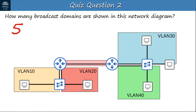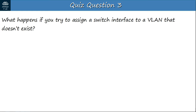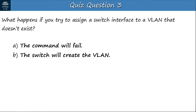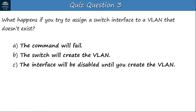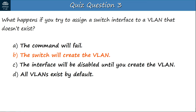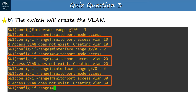Question 3: What happens if you try to assign a switch interface to a VLAN that doesn't exist? A — the command will fail. B — the switch will create the VLAN. C — the interface will be disabled until you create the VLAN. Or D — all VLANs exist by default. The answer is B: the switch will create the VLAN. As shown earlier in this video, if you assign a switch interface to a VLAN that doesn't exist yet, the switch will create the VLAN automatically.